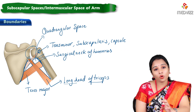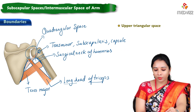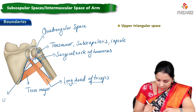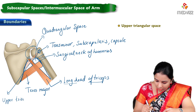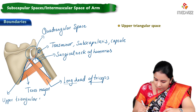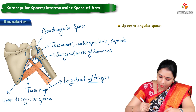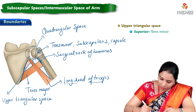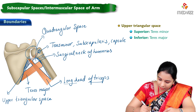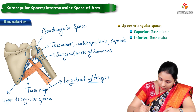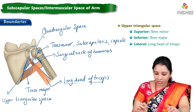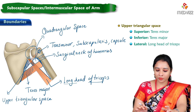Next we shall see the boundaries of the upper triangular space. The upper triangular space is bounded superiorly by teres minor, inferiorly by teres major, and laterally by the long head of triceps. These are the boundaries of the upper triangular space.